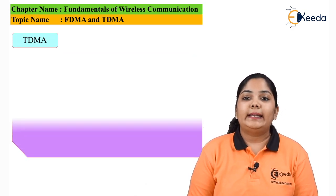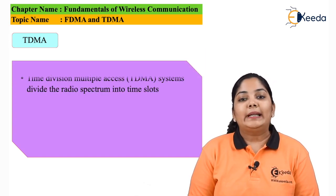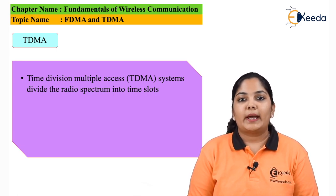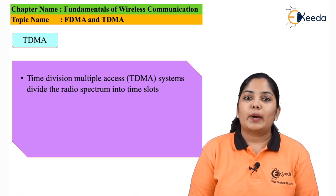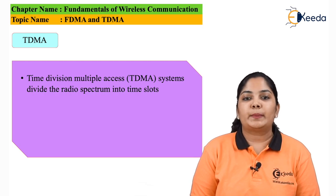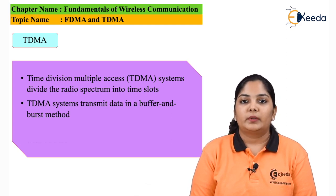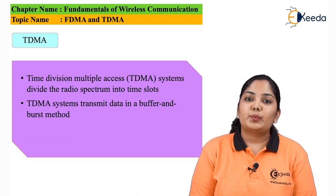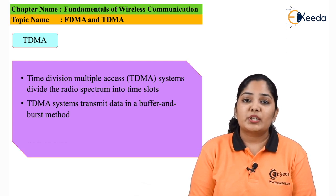Next we move on to TDMA, which is known as time division multiple access. In TDMA, the entire spectrum is divided into multiple time slots — meaning one frequency channel is divided into multiple time slots and given to different users. Every user transmits and receives in their respective time slots. In TDMA, transmission is done in a buffer-and-burst method, which is a discontinuous method of transmitting data, unlike in FDMA where data was transmitted continuously.